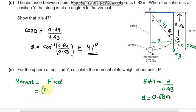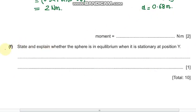0.3 times mg, 9.81, multiplied by 0.68 meters. So this becomes 2 Newton meters.